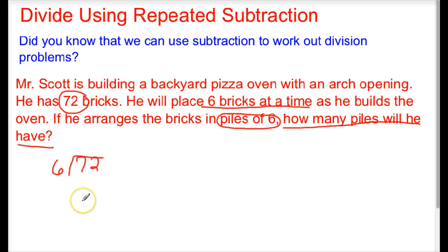Now, we are going to use subtraction to work out this problem. When we are looking at subtraction, we need to take out groups from our dividend. We could do that by looking at our divisor, 6, and just subtracting out groups of 6. So I can say 72 minus 6.